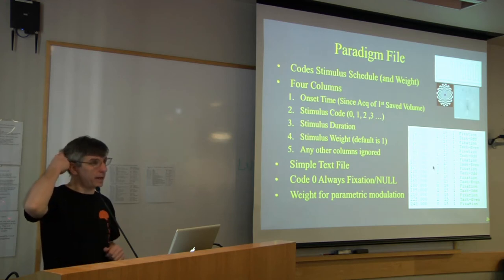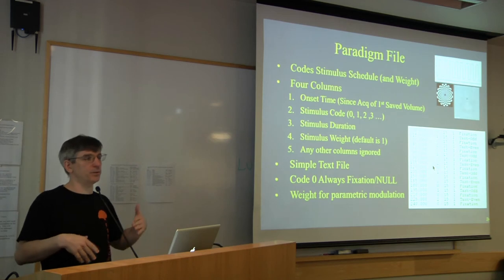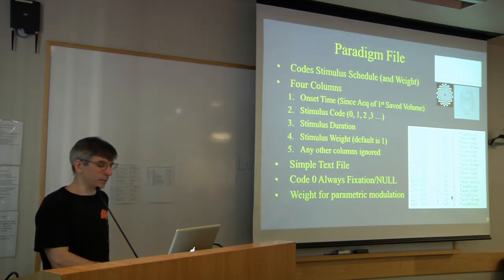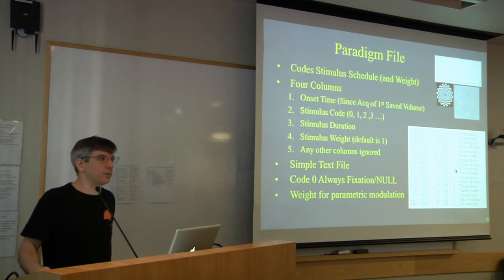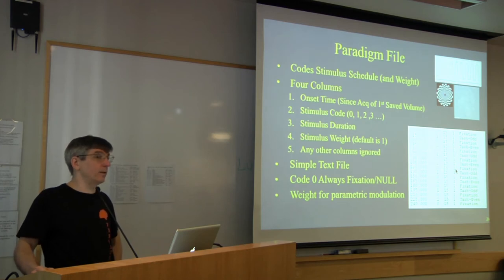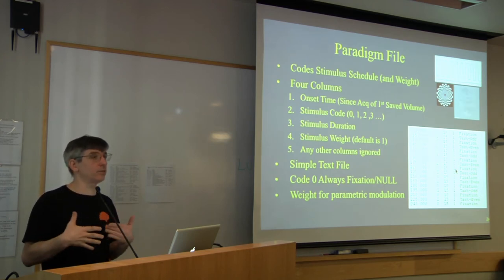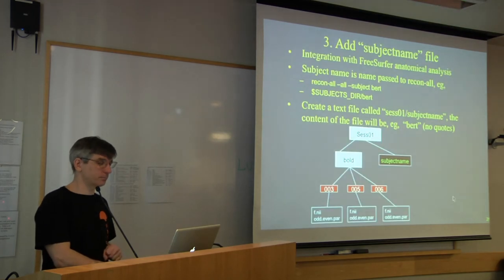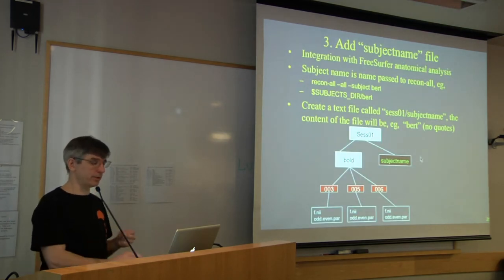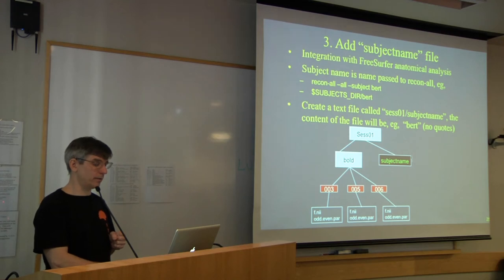The fourth column can be used for parametric modulation analysis. For example, if you had a hypothesis that the hemodynamic response was linearly related to reaction time, you could put reaction time in as parametric modulation and test exactly that hypothesis. A separate technique for dealing with bad data points will be introduced later.